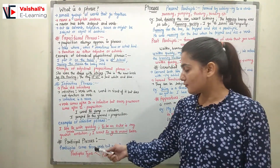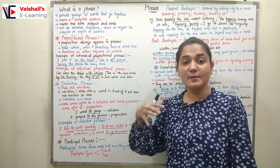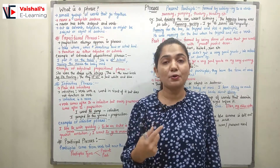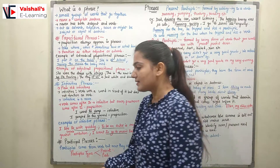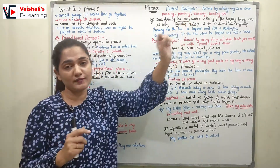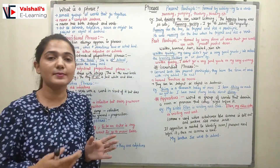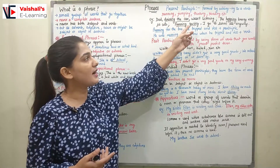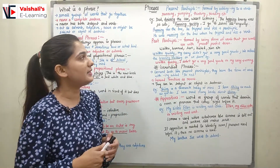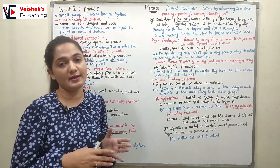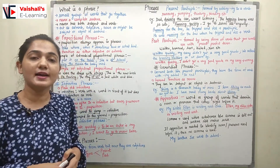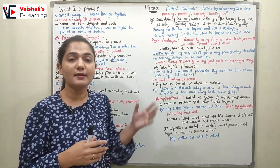Coming to participle phrases. Participles come from the verb but function as adjectives in the sentence. There are two types: present participle and past participle. Present participle is formed by adding '-ing' to the verb — like running, jumping, thinking, reading. For example, 'Dad driving the car wasn't listening' — 'driving the car' is a present participle phrase. 'The hopping bunny was so cute' — 'hopping' is the adjective. 'Running quickly, I go to school late' — 'running quickly' is a present participle phrase.